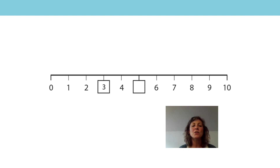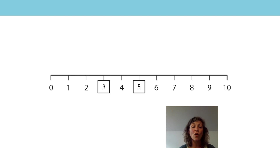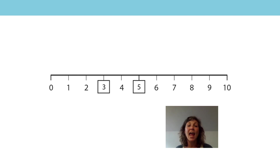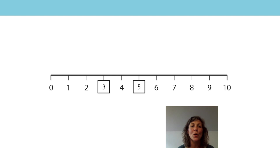Shall we start again? 0, 1, 2, 3, 4 — oh no, I've got another missing number. Did you say 5? That's right, because 5 is 1 more than 4. Let's start again: 0, 1, 2, 3, 4, 5, 6, 7, 8, 9, 10. We're going to be using our knowledge of this and 1 more to help us with our learning today.